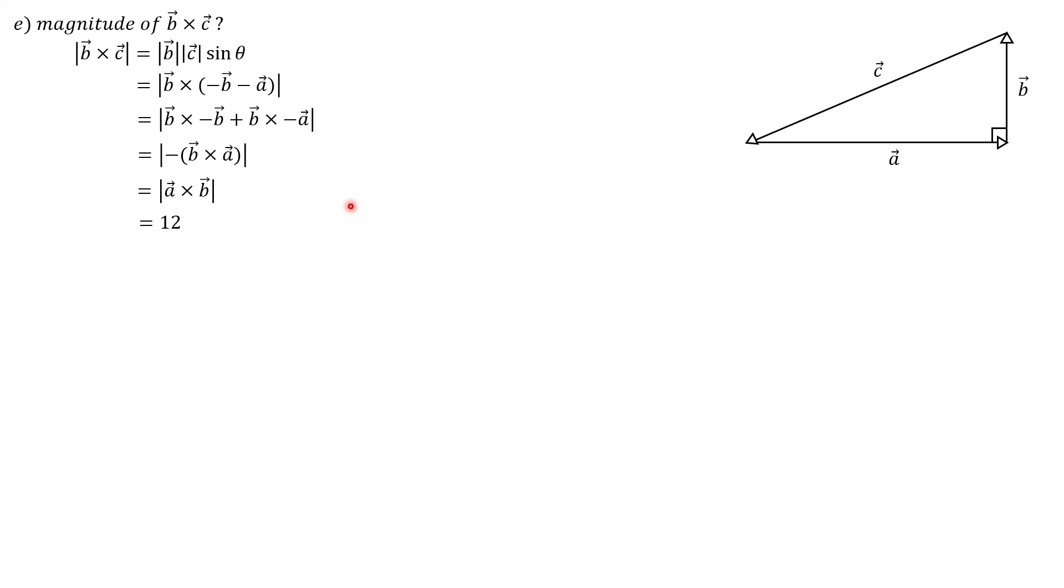And finally, for our last part, part F, we want the direction of B cross C. And you will again do this the exact same way that you did parts B and D. You're going to use the right hand rule with your pointer finger in the direction of B, your middle finger in the direction of C. And that will mean that your thumb is pointed in the direction of B cross C, which in this case should be toward you, or out of the screen, which is the positive Z direction. And that is your final answer to part F.